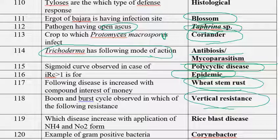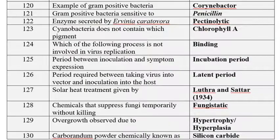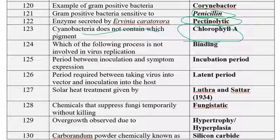Rice blast disease increases with the application of NH4 and nitrogen. If we apply more silica we can reduce or control rice blast disease. Example of gram-positive bacteria is Corynebacterium — among given options Corynebacterium is the right one. Gram-positive bacteria are sensitive to penicillin. The enzyme secreted by Erwinia carotovora is pectinolytic enzyme. Corynebacterium does not contain chlorophyll. In virus replication, there is no step called binding.